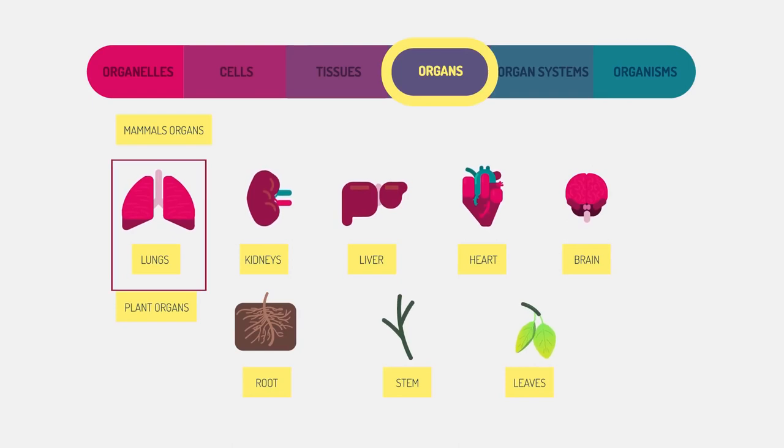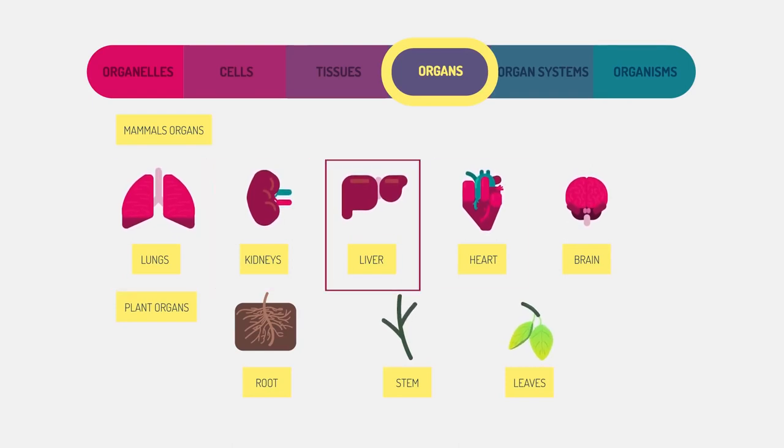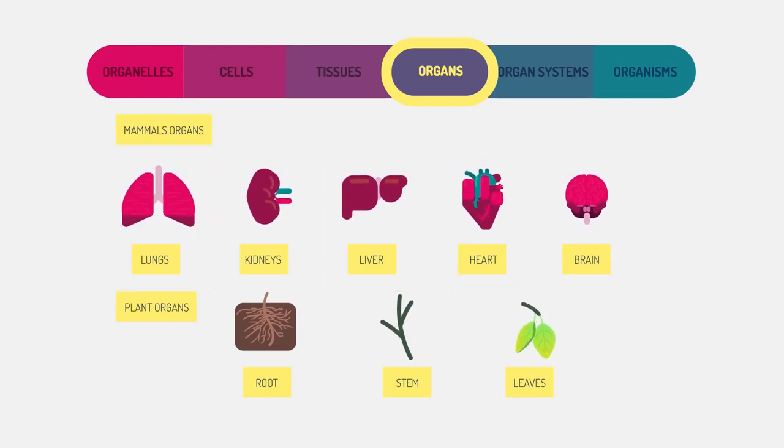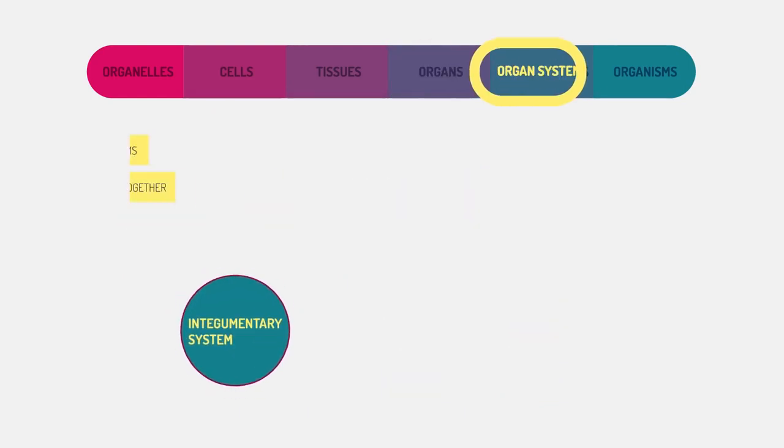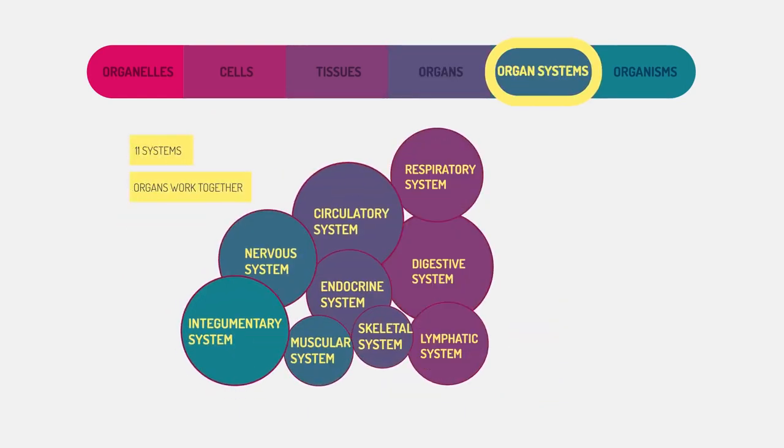But plants have organs too. These specialized organs work together in organ systems, performing body functions.